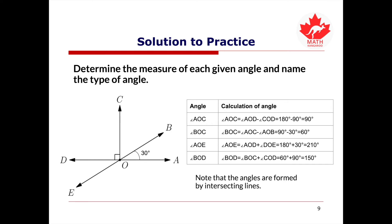Lastly, we have angle BOD. Angle BOD equals angle BOC plus angle COD, which is 60 degrees plus 90 degrees, equaling 150 degrees. Since 150 degrees is greater than 90 degrees and less than 180 degrees, angle BOD is an obtuse angle.